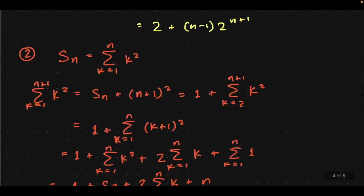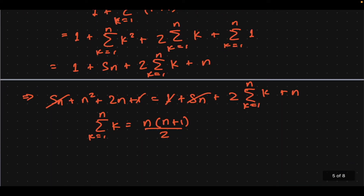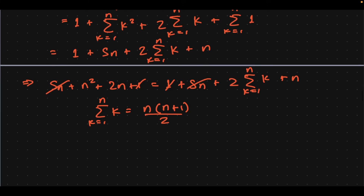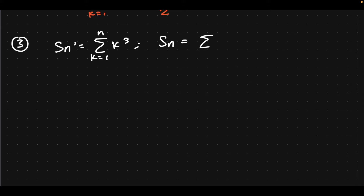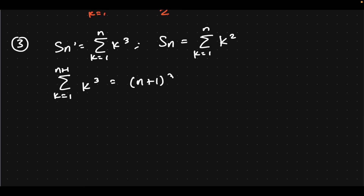So if you want to find a formula for k squared, you guessed it — we need to do a k cubed. Holding that thought in mind, Sn prime has got to be the function we use for the perturbative expansion: k cubed. And then Sn is what we intend to find. In the first example, Sn prime and Sn were the same, but that doesn't have to be the case. So, expanding it out like we always have, we have k cubed, giving us n plus 1 cubed plus Sn, and then the first term, which is 1 plus sum from k equals 2 to n plus 1 of k cubed.